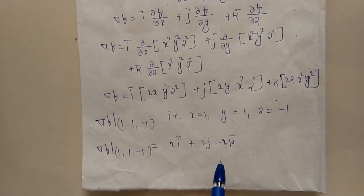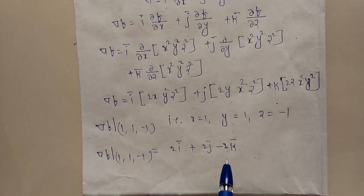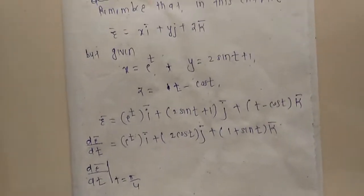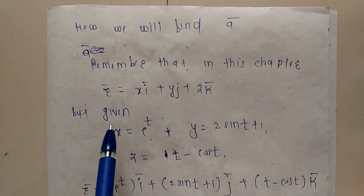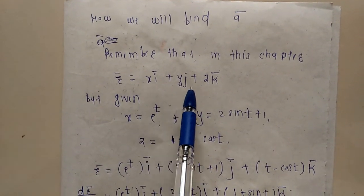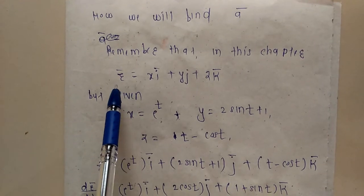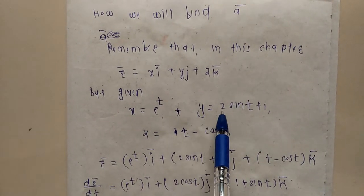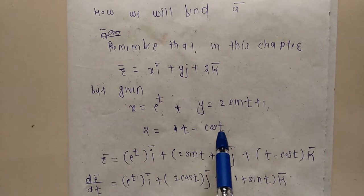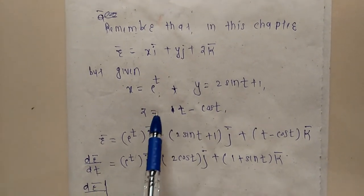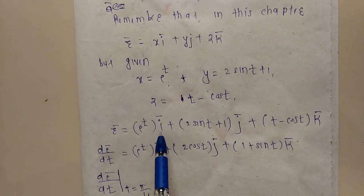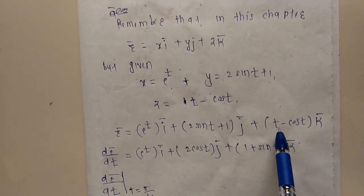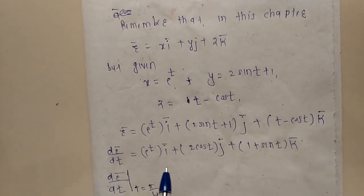The next target is to find the value of ā. Remember that r̄ = xi + yj + zk. Given the curve: x = eᵗ, y = 2sin(t) + 1, and z = t - cos(t), we substitute all values into r̄: r̄ = eᵗ i + (2sin(t) + 1) j + (t - cos(t)) k.